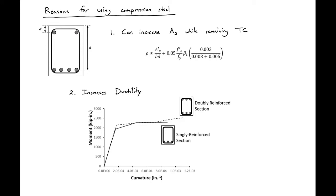In this video we're going to look at the reasons that we use compression steel in addition to our tension steel. The first and primary reason is it allows us to increase the amount of tension steel that we can have in our section while still remaining tension controlled. Here's an expression showing the allowable reinforcement ratio for a beam with both tension and compression steel while our section still remains tension controlled.